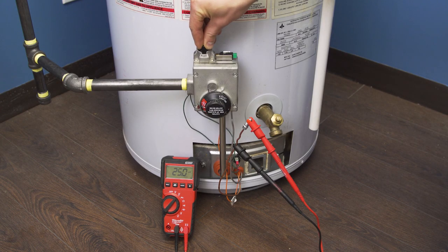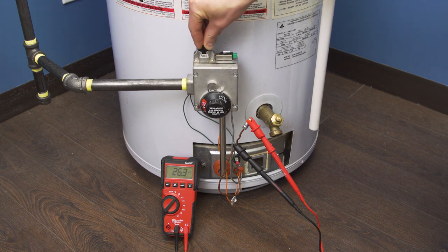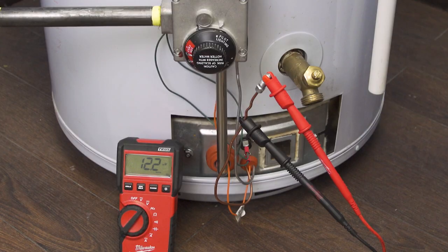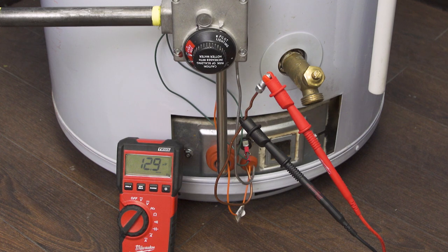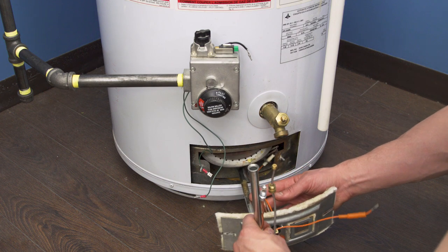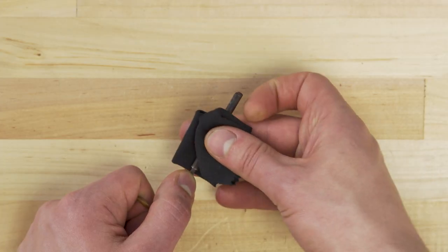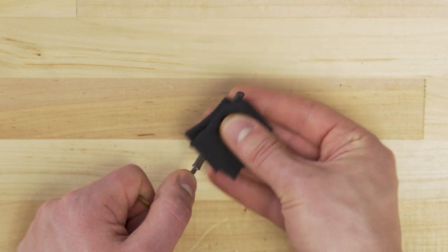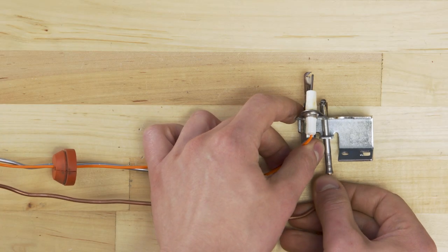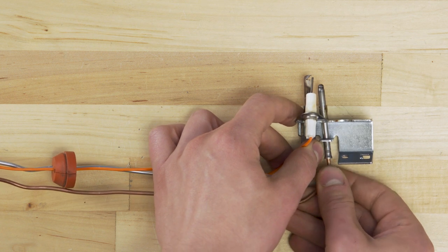In an open circuit test, a healthy thermocouple should read between 20 and 30 millivolts. If the multimeter reads under 20 millivolts, then the pilot might have trouble staying lit. Over time a buildup of carbon will act as an insulator and will reduce the voltage. One solution is to clean it, but in a lot of cases it's best to install a new thermocouple.